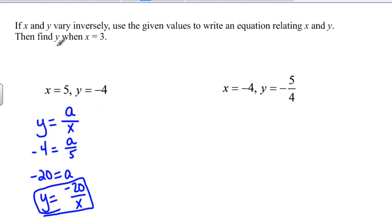My next step is find y when x equals three. So we just take that same equation y equals negative twenty over x and we plug three in for x and we say y equals negative twenty divided by three and that's our answer negative twenty thirds.